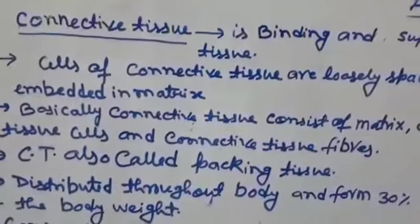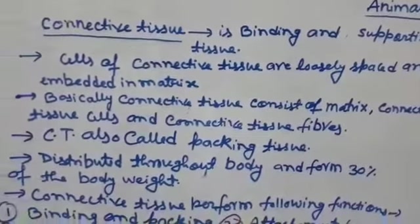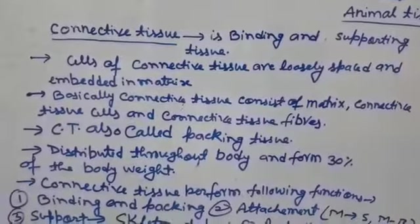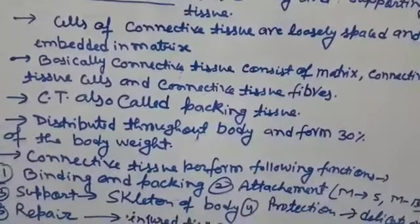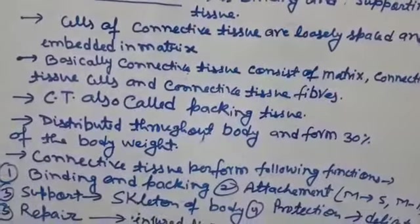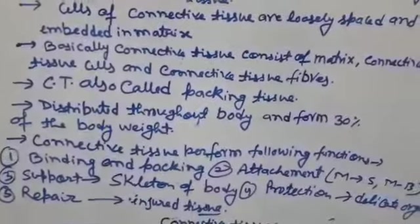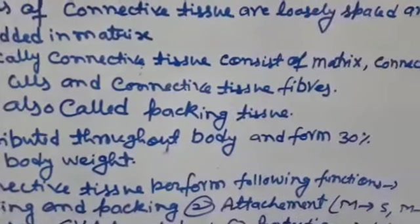The cells of connective tissue are loosely spaced and embedded in a matrix. Basically, the connective tissue consists of cells embedded in the matrix.